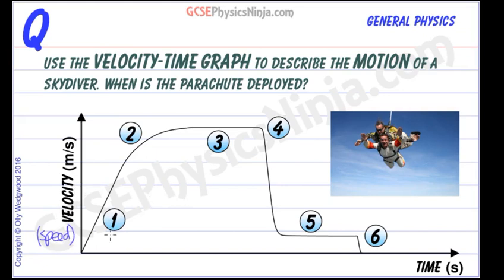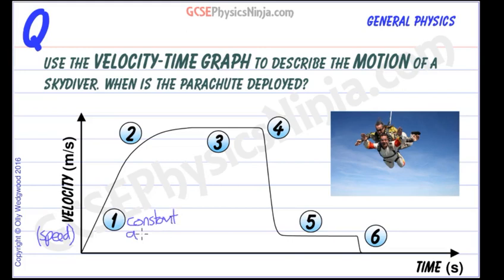So what's happening at these particular points? When we've got a velocity or speed-time graph we look at how the speed is changing. Here we can see that the speed is increasing at a constant rate — it's going up in a straight line. So here at number one we've got a constant speeding up, which in physics we call a constant acceleration.